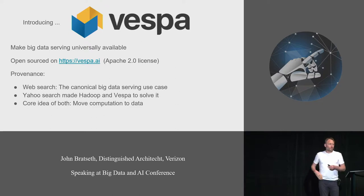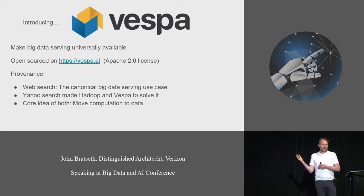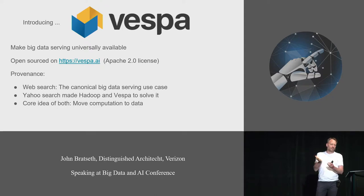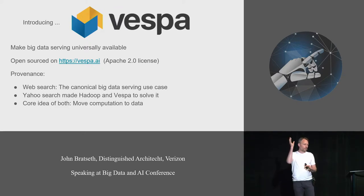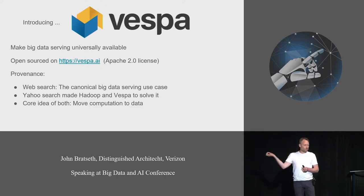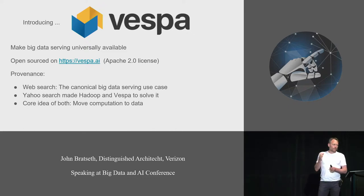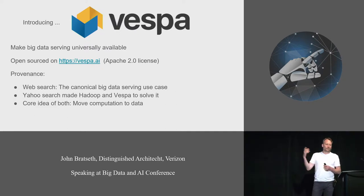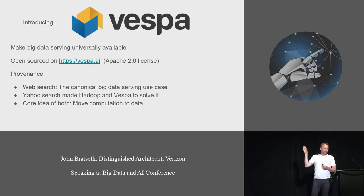Vespa grew out of trying to solve the web search problem, which, when you think about it, is the canonical big data serving problem. You have lots of data and lots of requests coming in, and you need to evaluate a machine learning model to match the queries of users to each of the documents. And because there are an almost infinite number of possible queries, you can't pre-compute the results for every given query — so you need to do everything in real time.